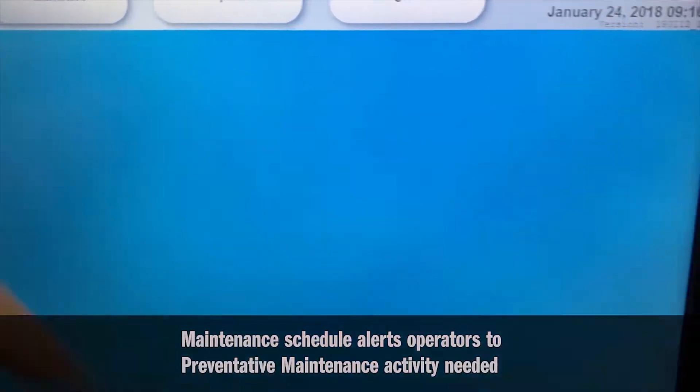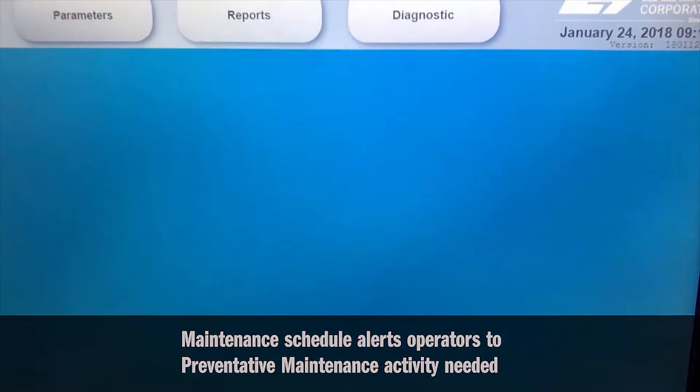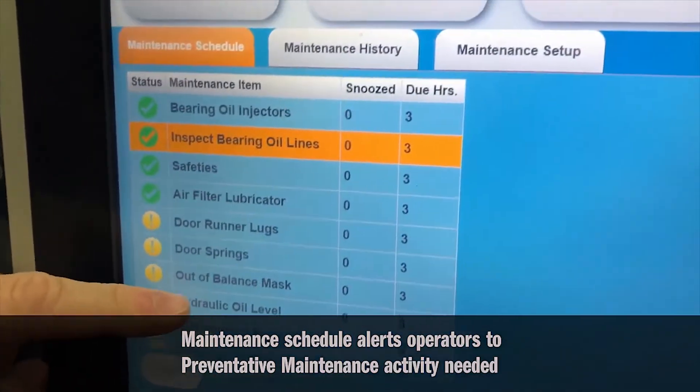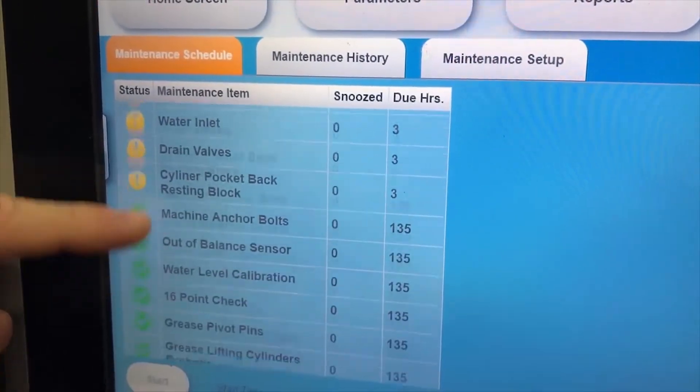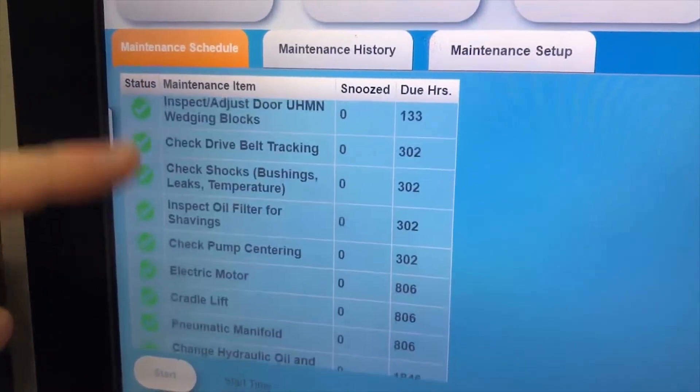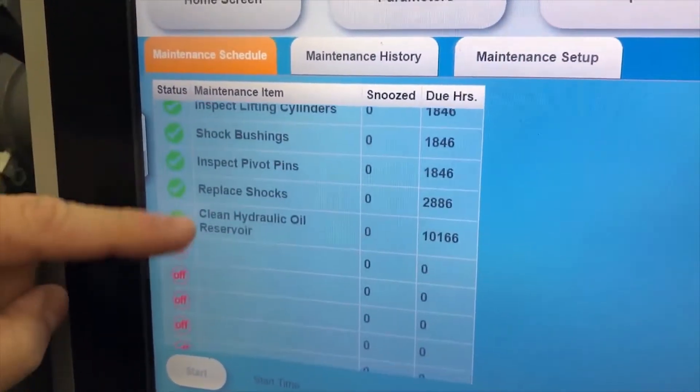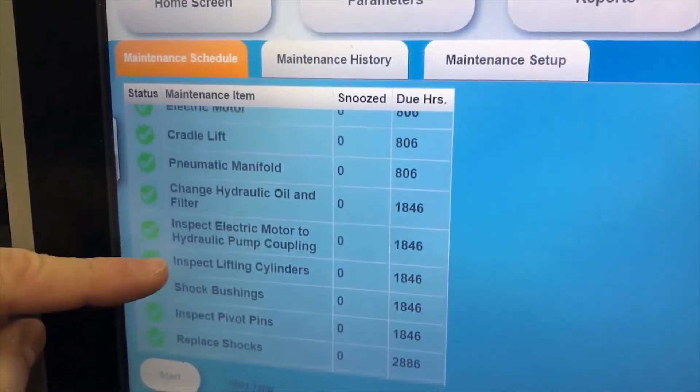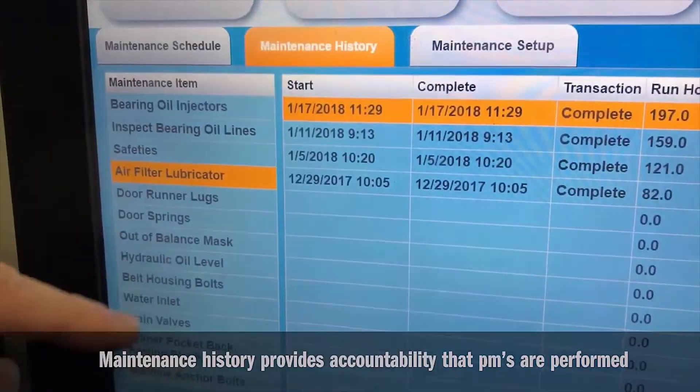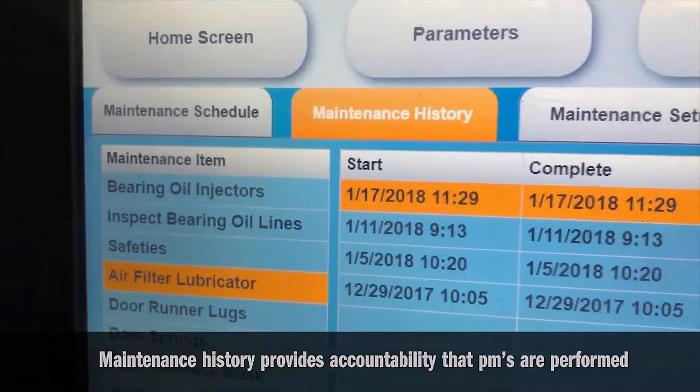Uptime makes preventative maintenance easier with an automated maintenance schedule featuring scores of checkpoints, such as bearing oil lines, hydraulic oil levels, door springs, safeties, and belt housing bolts. It alerts operators when checks are needed to ensure every component is given proper attention.